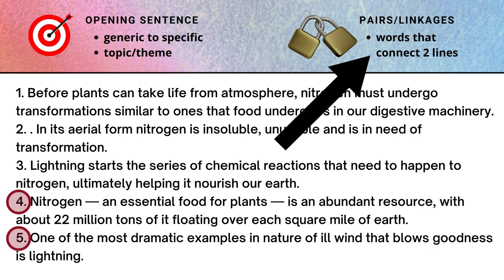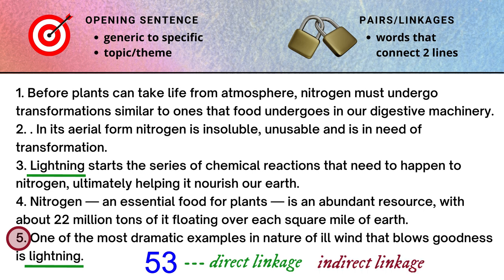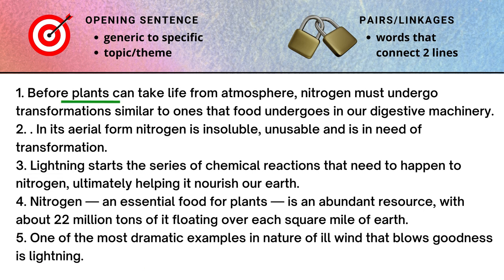The second leg of this strategy is to identify linkages between sentences. We already know that point number four or five is going to start off this paragraph. Since point number five mentions lightning and there is only one more sentence which mentions lightning, point number three is very likely to follow point number five — and if you read them together, you would realize it's a direct linkage. Direct linkage means that three is going to come immediately after five, no matter where in the entire sequence, because lightning has not been mentioned anywhere else. An indirect linkage is when you know a sentence is going to follow another sentence but you're not sure if it's going to follow immediately. For example, point number one mentions plants needing nitrogen to undergo some transformation, and point number four mentions nitrogen being essential for plants — so you know point number one is going to follow point number four, but you don't know if there is something in between.